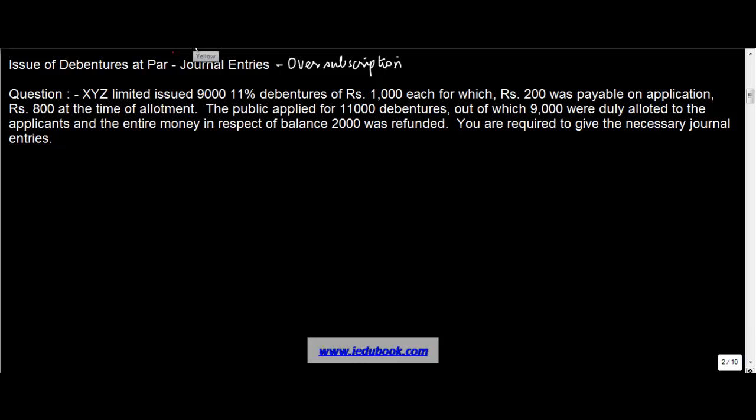So let's see the question first. XYZ Limited issued 9,000 11% debentures of Rs. 1,000 each, for which Rs. 200 was payable on application, Rs. 800 at the time of allotment. The public applied for 11,000 debentures, out of which 9,000 were duly allotted to the applicants and the entire money in respect of the balance 2,000 was refunded. You are required to give the necessary journal entries.